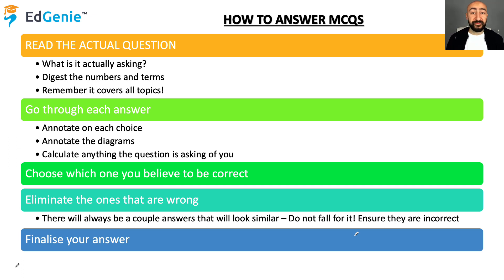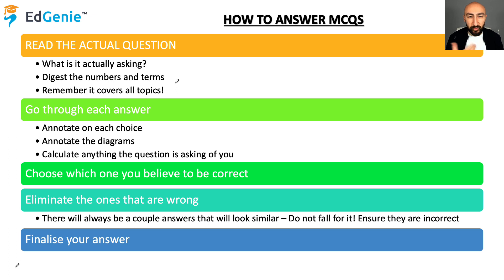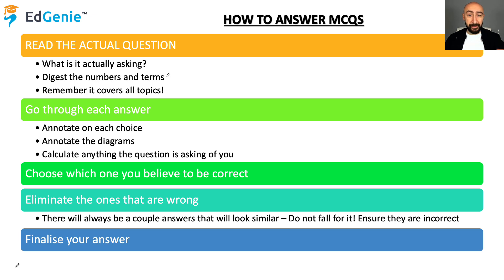Step one: read the actual question. What is it actually asking? Digest the numbers and terms. What do the numbers and terms in the question actually represent? So if they give you a question on elasticity of demand, which elasticity of demand is it? What's the number for PED that they've given, or what's the number for the percentage changes? What do they want, what are they asking you?